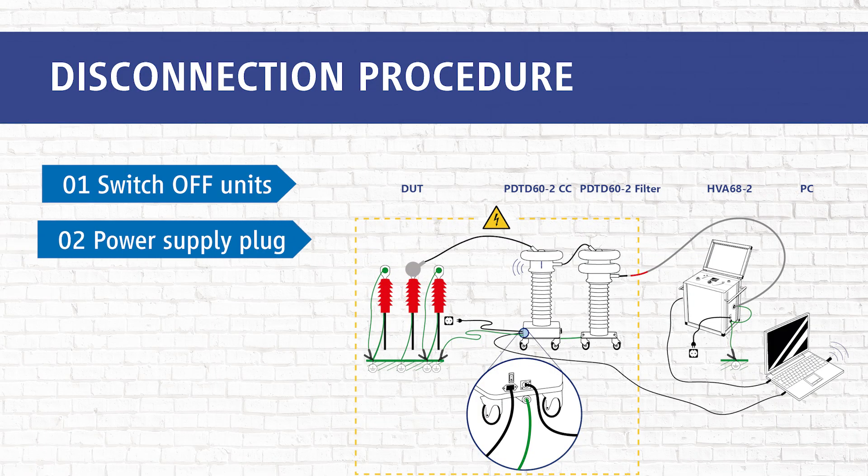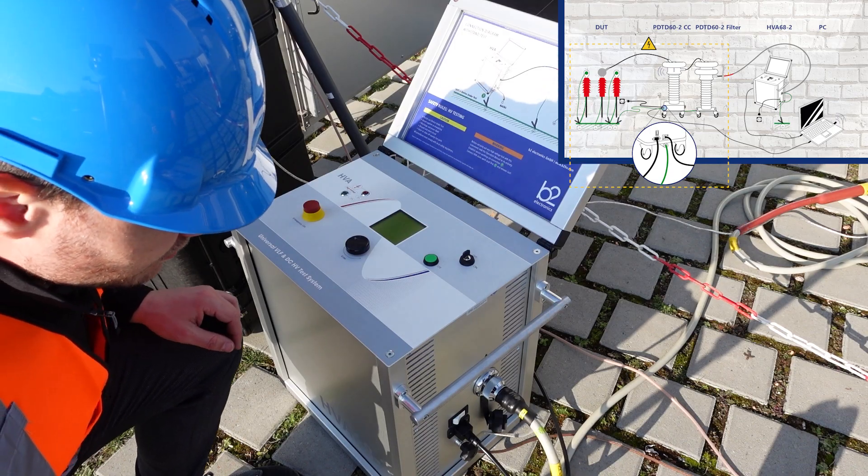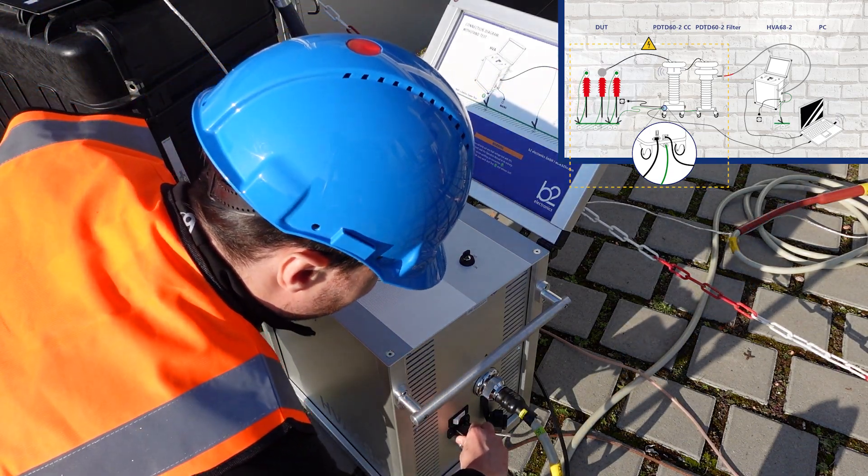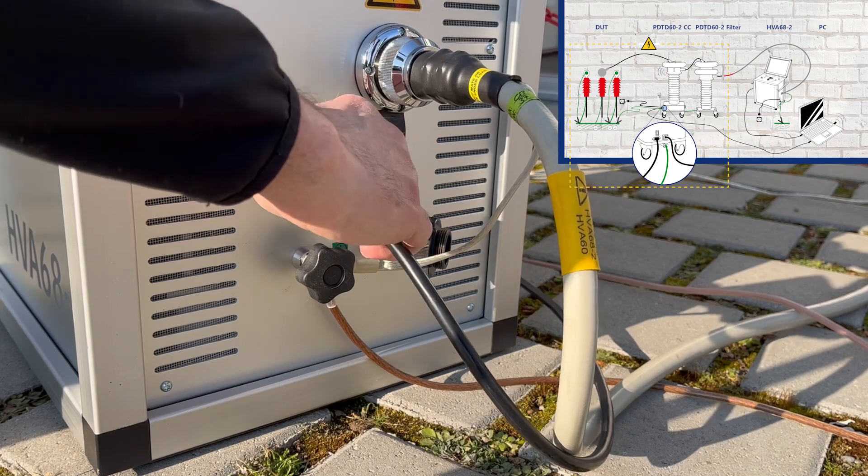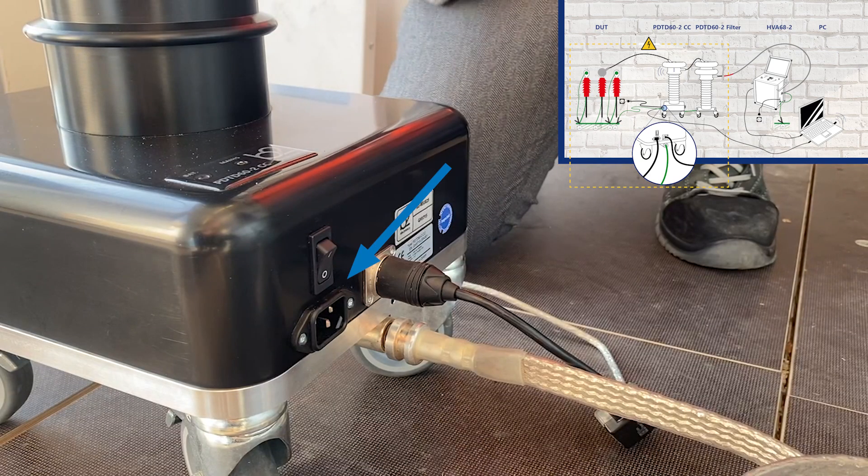During the second step we disconnect the power supply cables from the power cable. We disconnect the power supply cable from the HVA, then we disconnect the power supply cable from the PD2CC if the mains is connected.